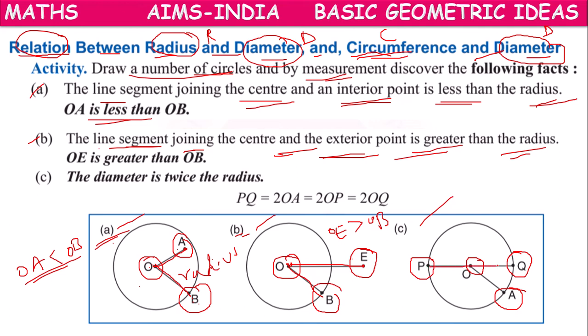Diameter means the line joining two points on the circle passing through the center. The diameter will be double the radius. So PQ equals double the radius — PQ = 2R.